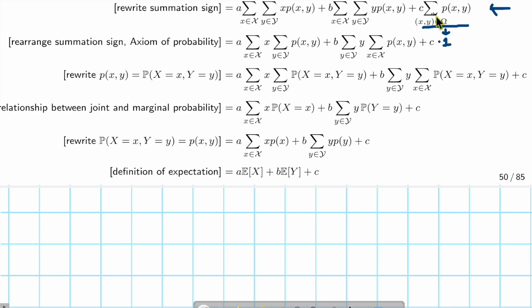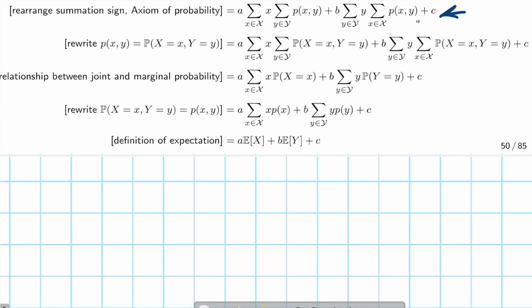So now we are here with that this whole term, the summation is just one. Then what's next? This summation is x only, this summation is y. So we can move the x out of the summation on y because it has nothing to do with y. So we get this expression, and similarly get this.